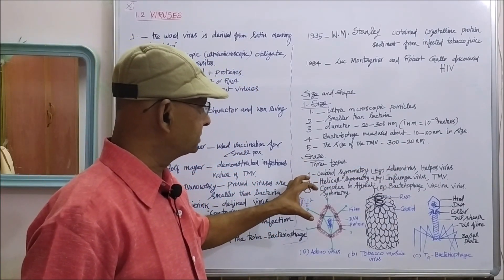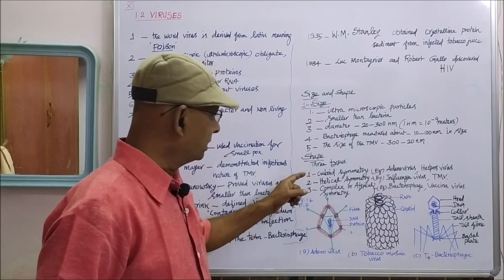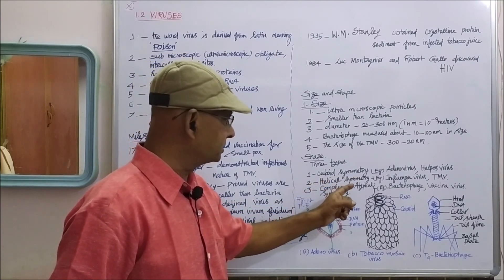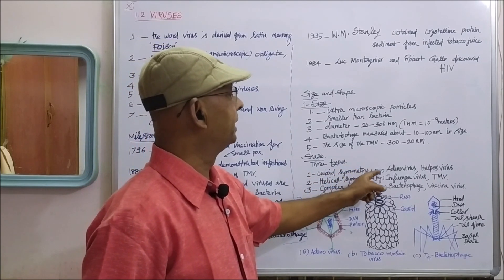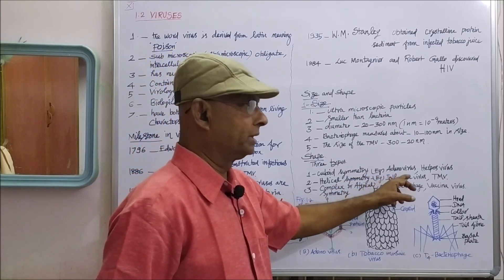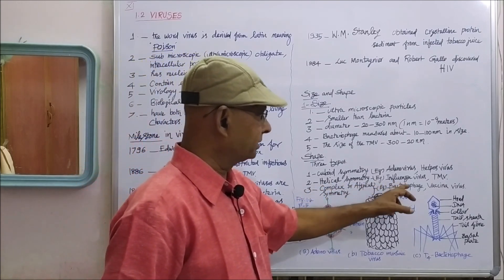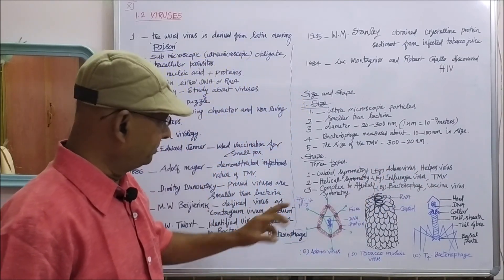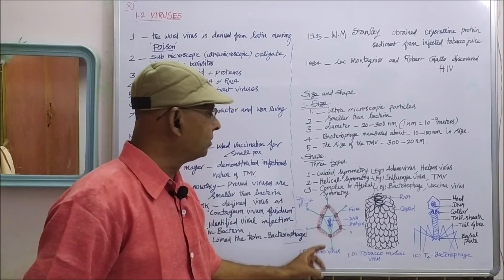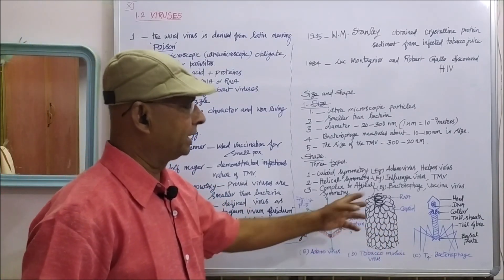Viruses are classified into three types based on shape. Number one: cuboid symmetry — examples include adenovirus and herpes virus. Number two: helical symmetry — examples include influenza virus and tobacco mosaic virus. Number three: complex or atypical symmetry — examples include bacteriophage and vaccinia virus. Diagrams for adenovirus, tobacco mosaic virus, and bacteriophage are given in figure 1.4 on page five.